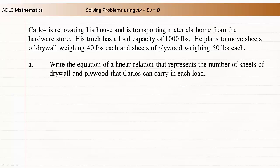Part A: Write the equation of a linear relation that represents the number of sheets of drywall and plywood that Carlos can carry in each load. To begin, let's define some variables to represent our unknowns. We don't know the number of sheets of drywall or sheets of plywood, so we can use variables to represent these.